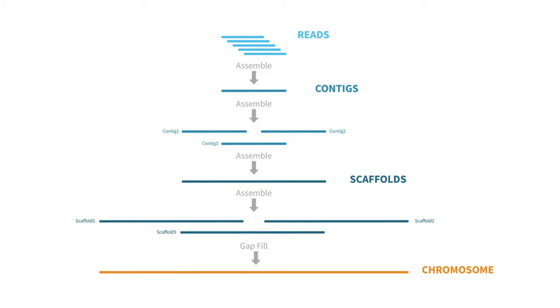In the contig assembly step, reads must overlap by a minimum number of base pairs or k-mers before they can be mapped together. In the scaffold assembly step, contigs do not necessarily have to overlap in order to be joined together. This can be attributed to paired-end sequencing.